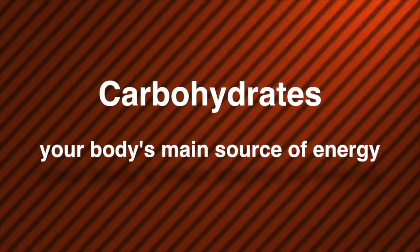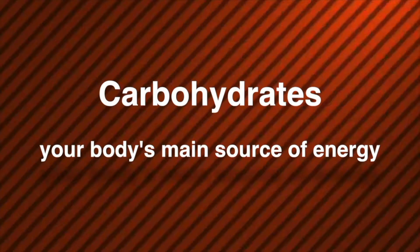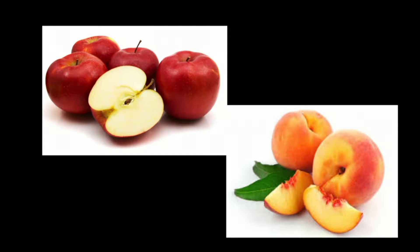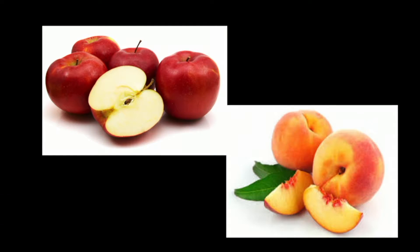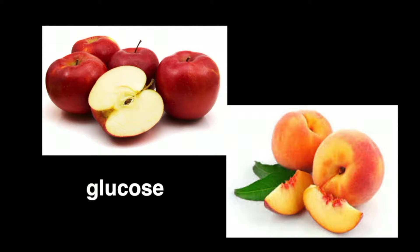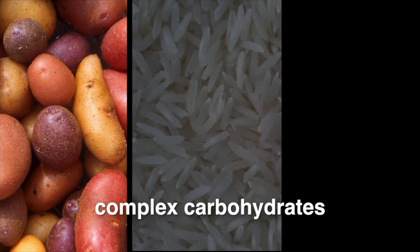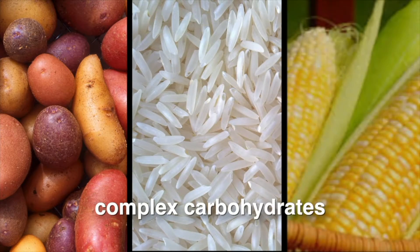Carbohydrates are your body's main source of energy. One type of carbohydrate is simple carbohydrates, also known as sugars. Fruits such as apples and peaches contain natural sugars. One type of sugar called glucose is the major source of energy for your body cells.